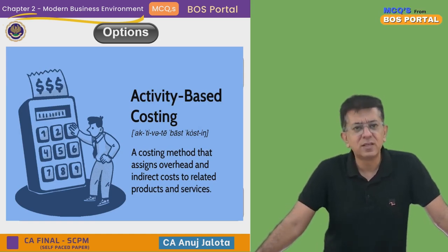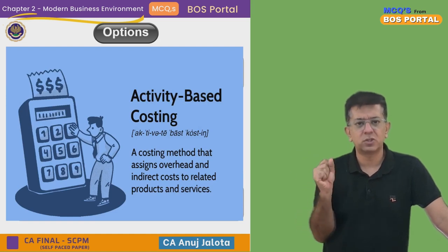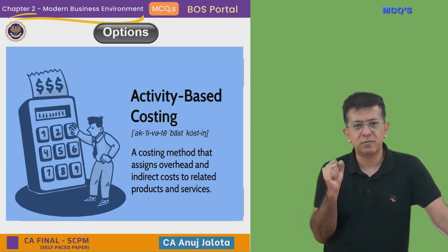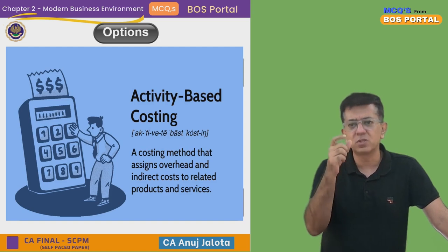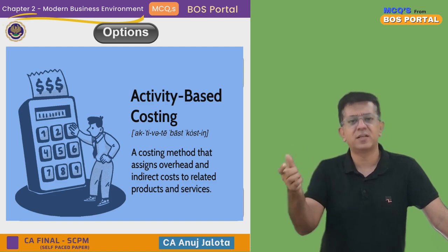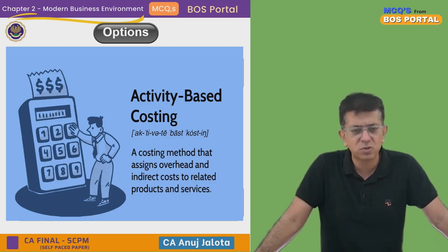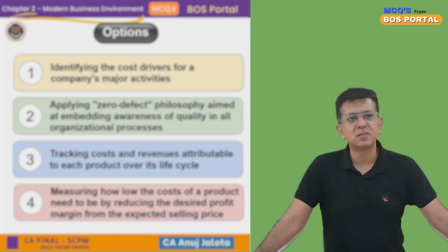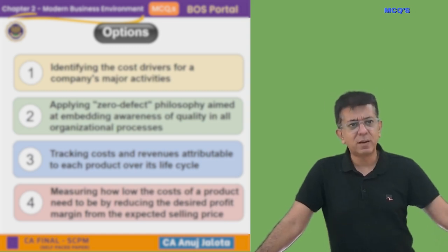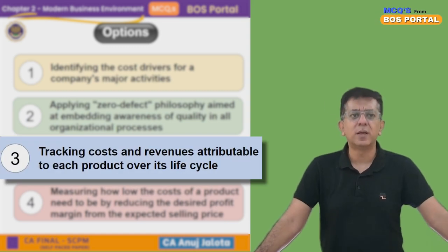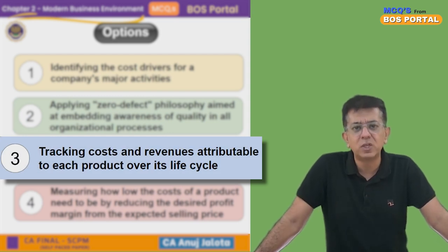In Activity Based Costing, all activities will get incurred because of a certain factor, and that certain factor is called a cost driver. So option one is not the answer. Moving to option three — tracking costs and revenues attributable to each product over the entire life cycle.